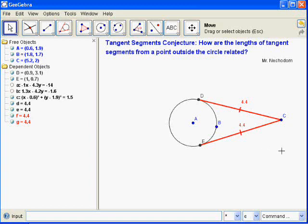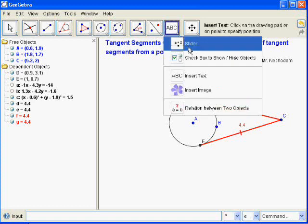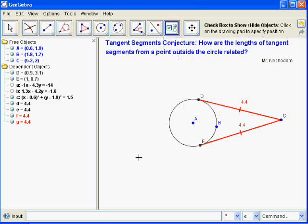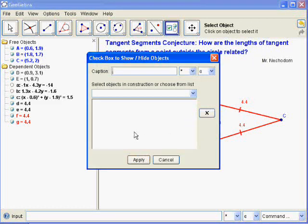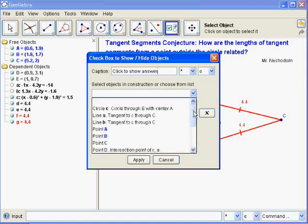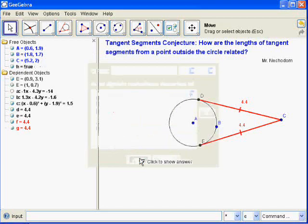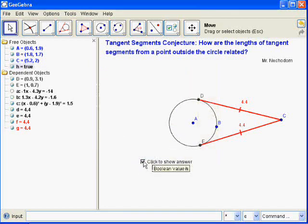Now what I want to do is have these show up only when I want them to. So I'll come up here to this menu item and check box to show or hide objects. Click on that, go down to where I want that check box, and I'm going to type in click to show answer. And I need to select the things I want to pop up, and that would be down here on segment F and segment G. And apply that. Now if I click this, they disappear. There they are.